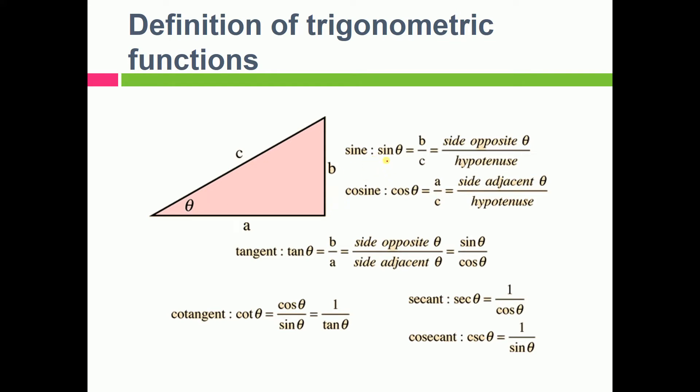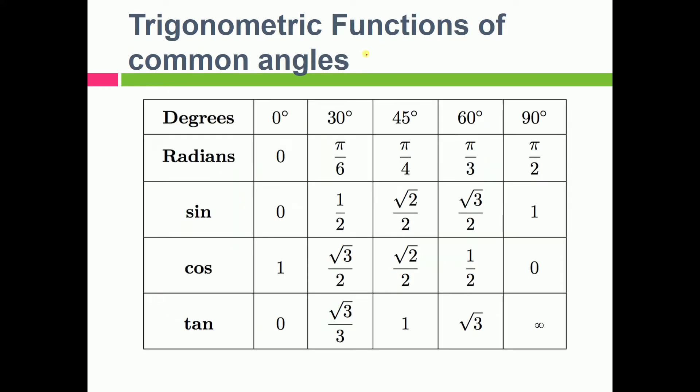If you want to find the sine theta, so sine theta is B by C which is perpendicular by hypotenuse. Cos theta is base by hypotenuse. Tan theta is perpendicular by base. Now just take the reverse: cot theta, sec theta, cosec theta. All these are some child things so let's proceed further.